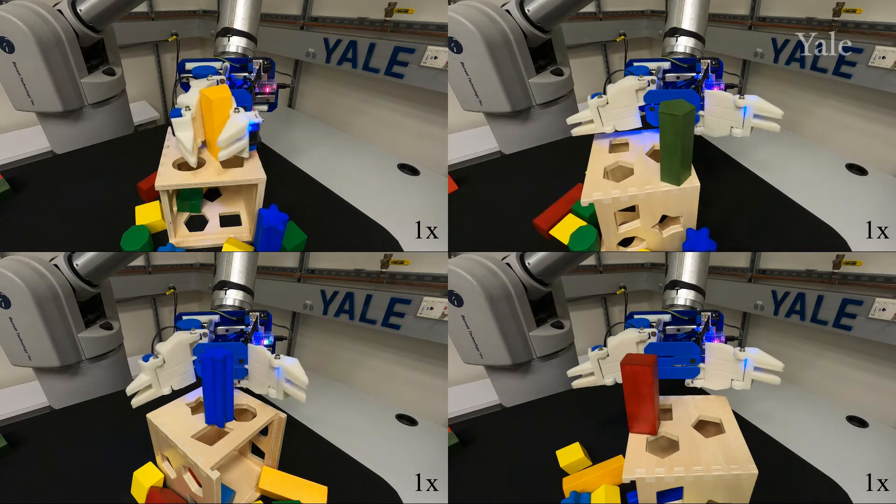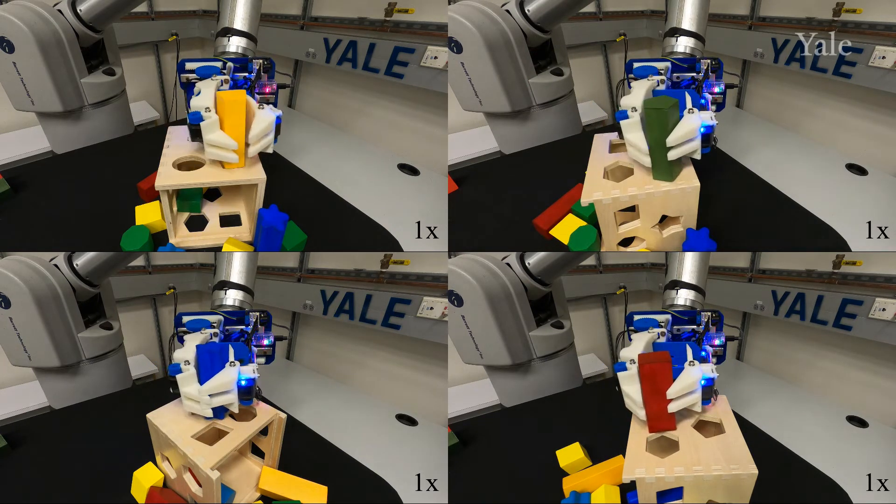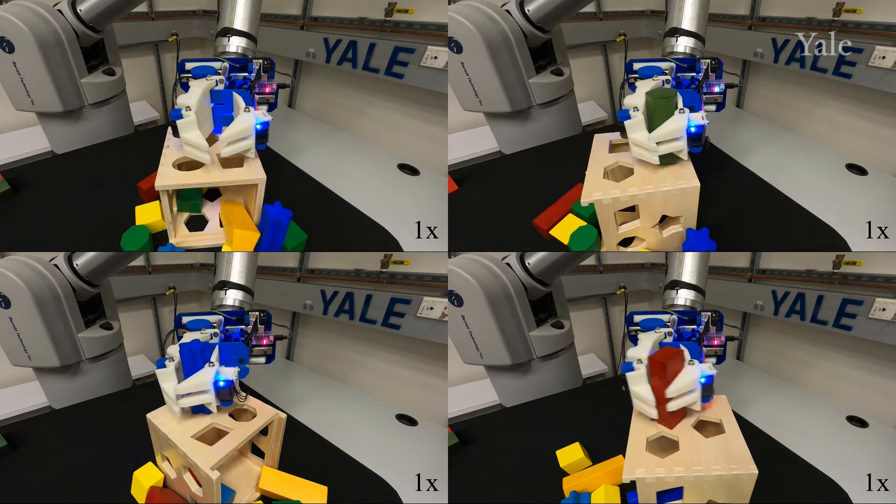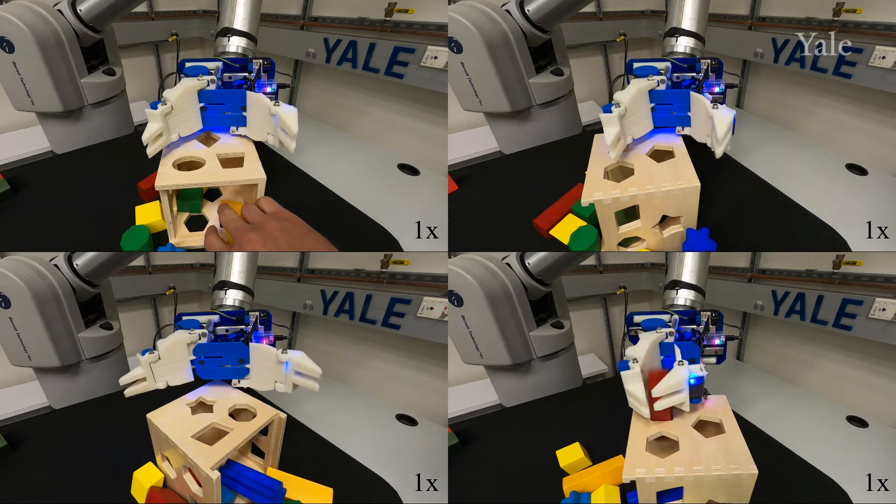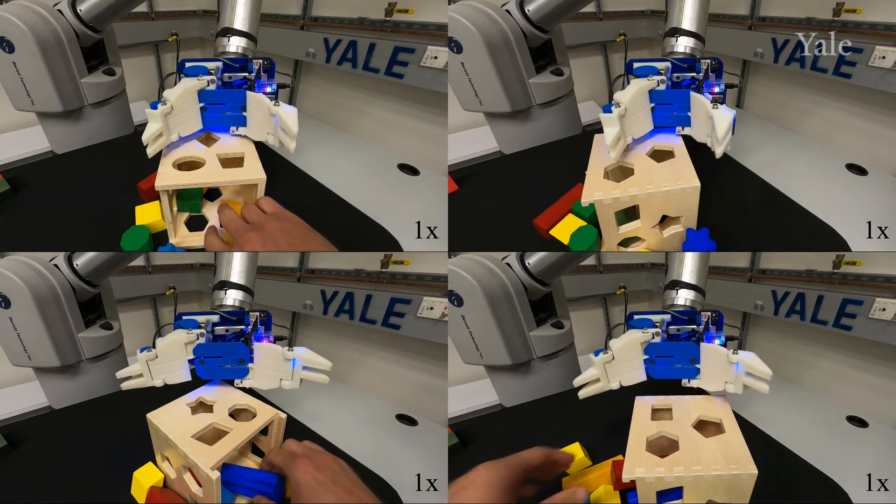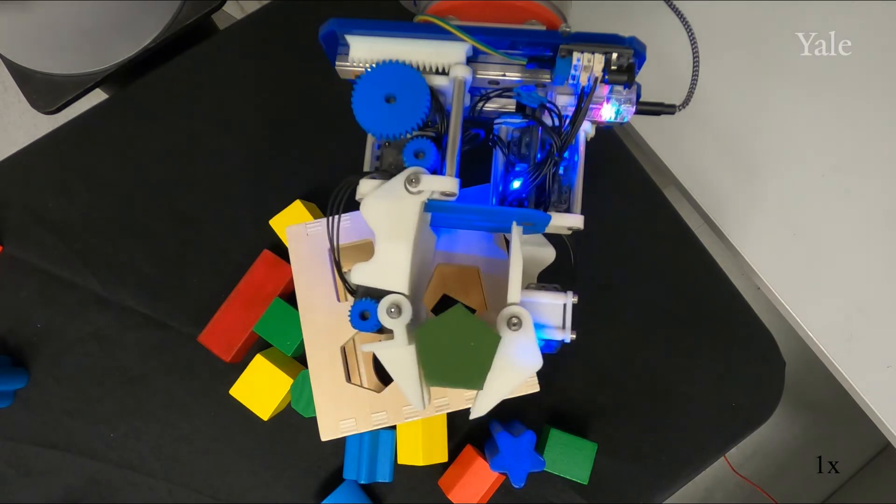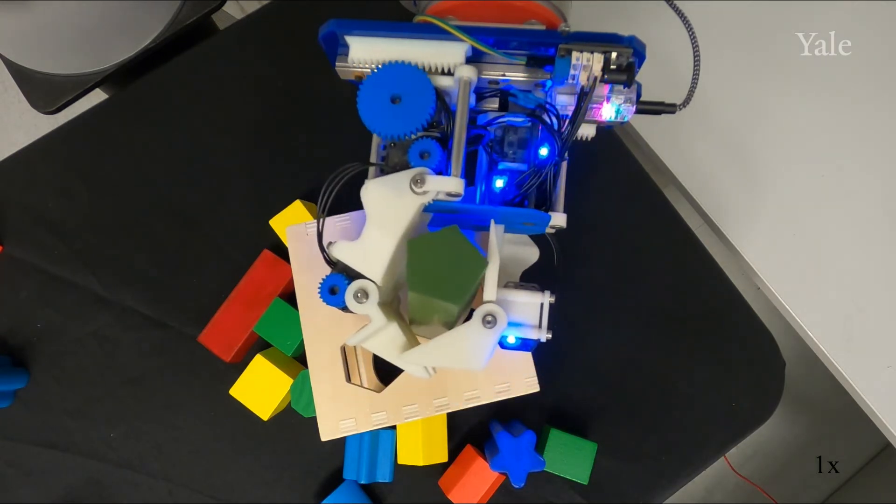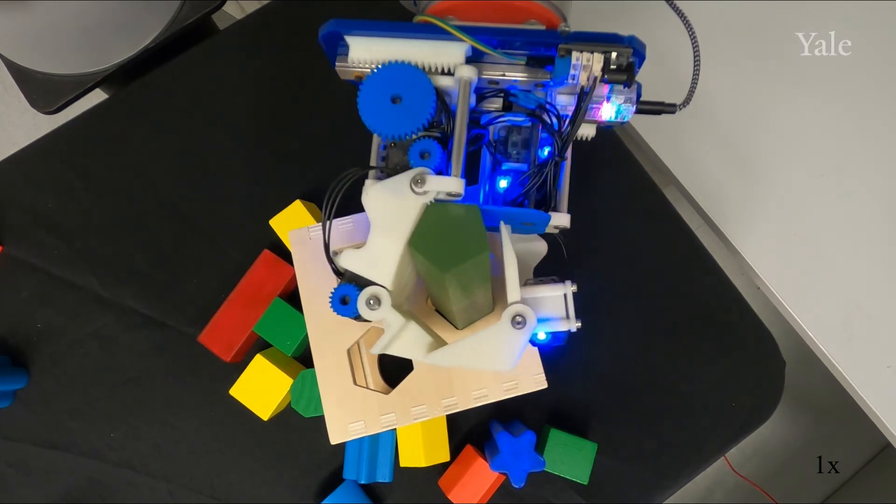Now we present the hand under teleoperated control, aligning blocks of various shapes with their respective matching holes. Clockwise from the upper left frame, the objects are a yellow trapezoid, a green pentagon, a red rectangle, and a blue star. This demonstrates that the hand can be readily controlled by a human operator to accomplish simple manipulation tasks, despite having six actuators. Here, you can also see the top view of the hand aligning the pentagon with its hole.